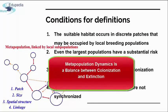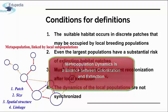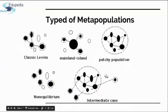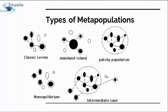To conclude this section: metapopulation dynamics is a balance between colonization and extinction. There are five main types of metapopulation organization or models. All metapopulation models share the dynamics of extinction and migration among patches, but each demonstrates a different range of variation in migration. Dashed lines indicate high migration, and hollow circles indicate unoccupied patches.